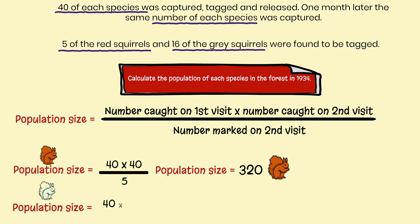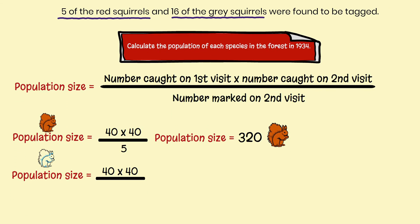What about the population of grey squirrels in 1934? 40 were caught on the first visit times 40 caught on the second visit, but 16 were caught on the second visit that had the mark on them. So the population size of the grey squirrels in the forest in 1934 was 100 grey squirrels — so not too many.